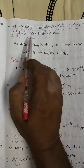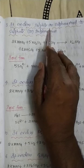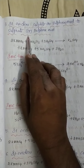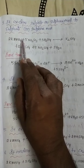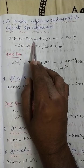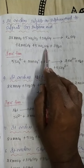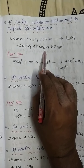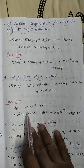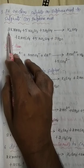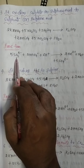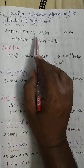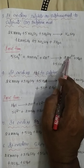Next, KMnO4 oxidizes sulfite or sulfurous acid to sulfate. KMnO4 reacts with Na₂SO₃, converting sodium sulfite into sodium sulfate. In ionic form, only the species that change oxidation state are mentioned in the equation; elements that do not change oxidation state are not included.